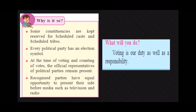Some constituencies are kept reserved for Scheduled Castes and Scheduled Tribes. The socially weaker sections of society may not have the required resources, education and contacts to contest and win elections. If the weaker section is not elected, the voice of a significant section of the population will not be heard. The makers of the Constitution thought that reserving constituencies for weaker sections would help them get elected and bring them politically at par with other sections of society.